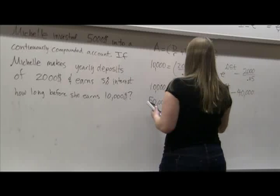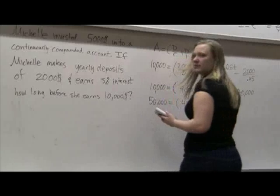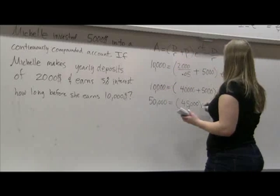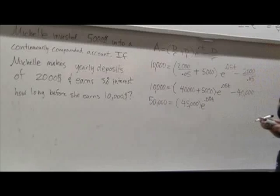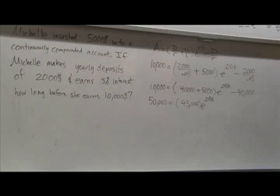And this is, oh this is $45,000 right? No? No? Yeah no? Yes no? Are we okay so far? No? Divide both sides by $45,000.